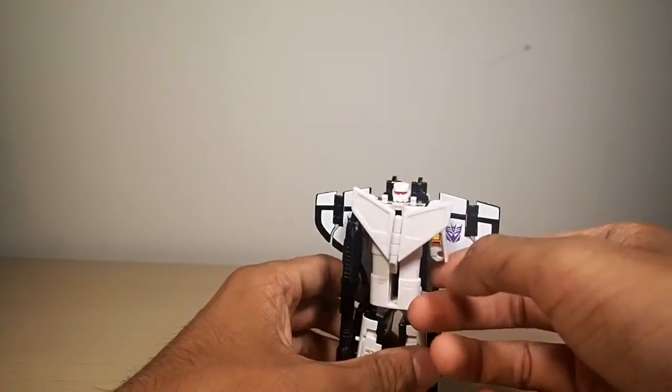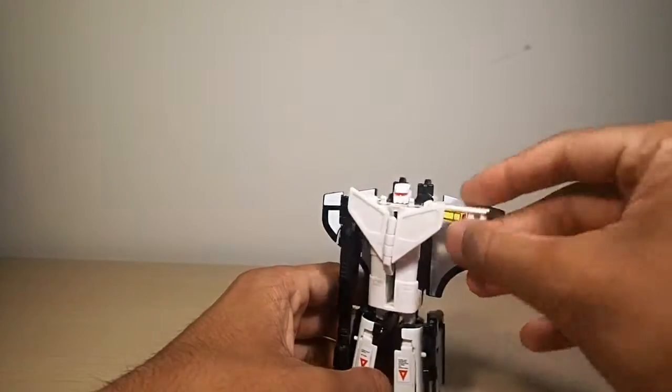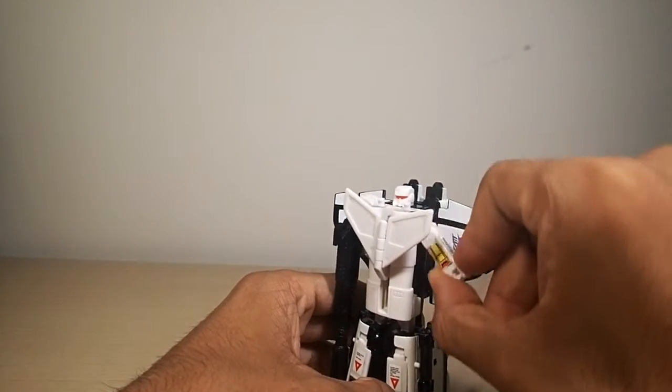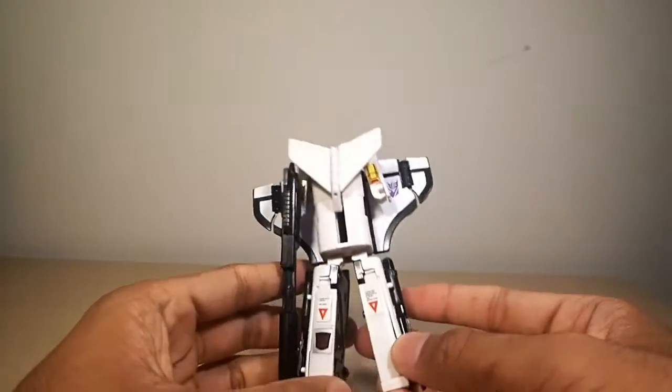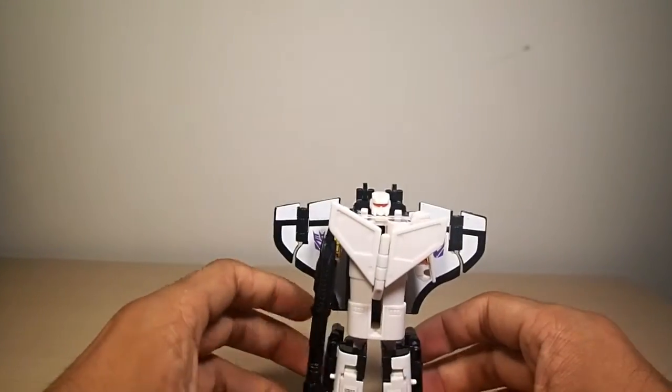So yeah, his only articulation is the ball joints in the shoulders and the fact that he has a hinge here. That's about it. I mean his legs can go out about that far, but why would you want to.